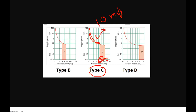Type C curve will operate at 6 to 10 times the rated current. Type B will operate at 3 to 5 times. Type D curve will operate at 10 to 20 times. Now we will mention what type of C curve is used and the tripping time is also mentioned.